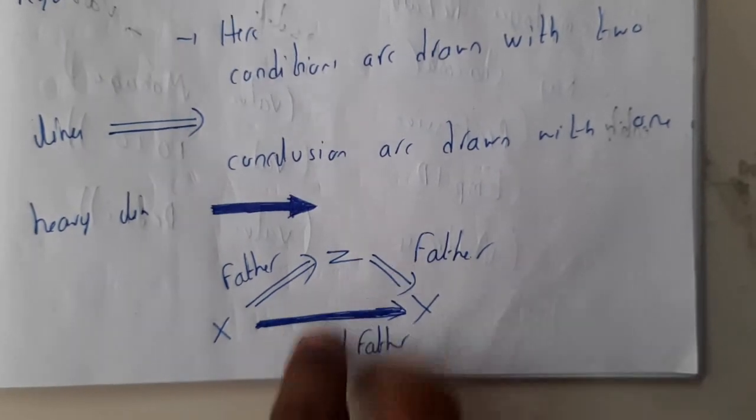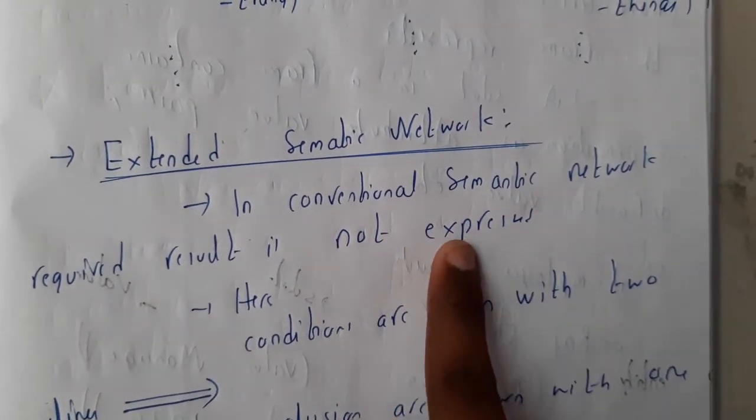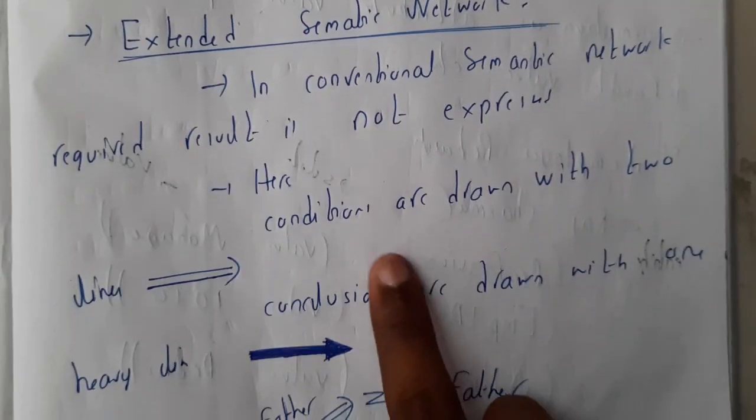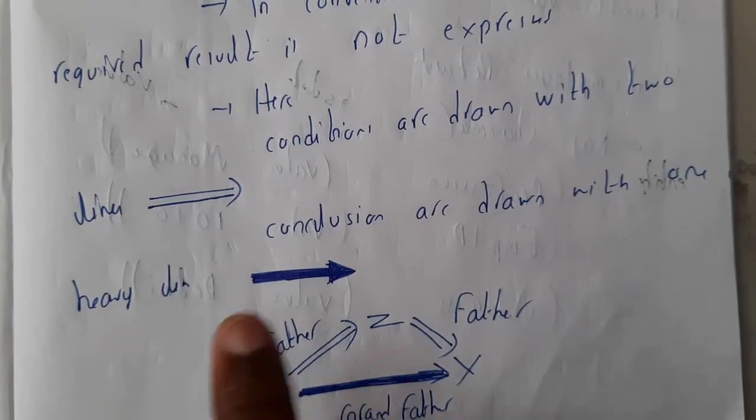In conventional semantic networks, requiring of the result are not expressed. Here conditions are drawn with two arrows and conclusions are drawn with heavy line arrows. In this way, I hope everyone got a clear idea on this.